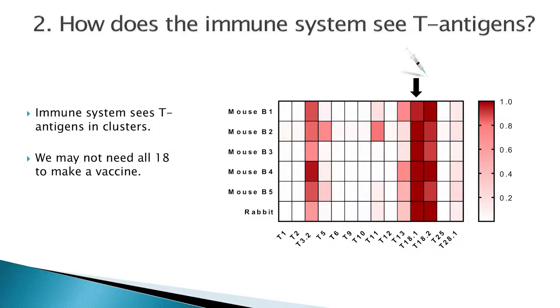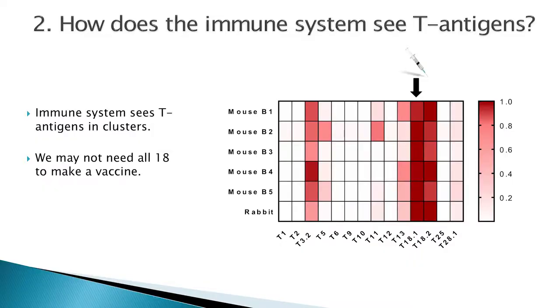Once we know what's out there, we need to know how the immune system actually sees it. What I've done is vaccinated some mice and a rabbit with a protein called T18, shown there. Where there is a red square, the animal has a really strong immune response to that protein. We've done a blood test essentially against these different strains, and what you see is a really strong response to T18 — our vaccine — but also a really strong response to a couple of others: strains 3, 13, and another 18. So the immune system sees these in clusters — we can give it one and trick it into thinking it's actually seen four. This means we may not actually need 18 different components in our vaccine; if we can select a smaller number of key proteins, each can protect against three or four strains, simplifying what we need to do.